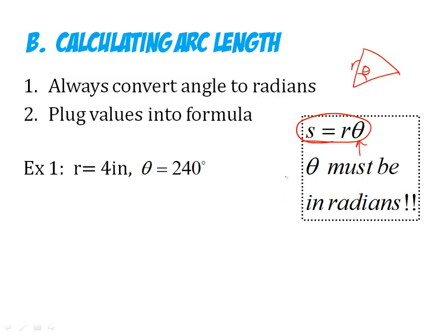It cannot be in degrees. So let's look at this example. The angle is 240 degrees, here's this 240 degrees, big old slice of pizza. And the radius is 4 inches. But this is degrees, so I need to convert to radians. So if you remember, 240 to convert it to radians, I have to multiply it by pi over 180.